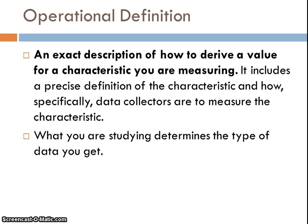With any of our hypotheses and questions in psychology, we need to operationally define what it is we are studying. An operational definition is an exact description of how to derive a value for a characteristic you are measuring — it includes a precise definition of the characteristic and how specifically we are going to measure it. You're going to be doing some practice with operational definitions. For example, going back to the question of whether caffeine consumption improves first period grades, we need to operationally define 'first period.' Are you talking about first period at Northern High School, which starts at 7:30? Or first period at DSA, which starts much later?